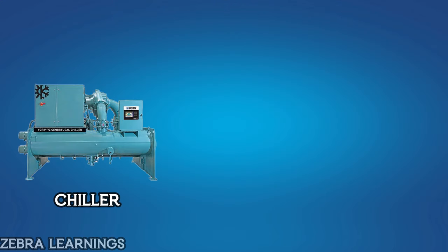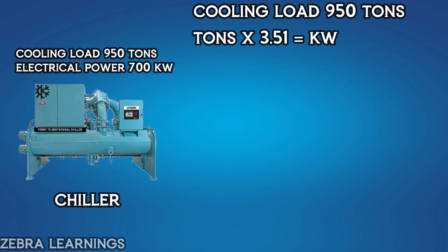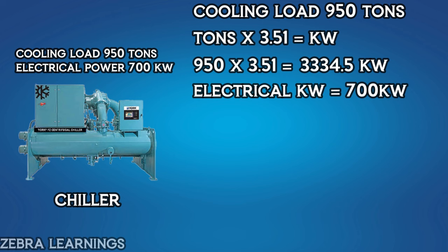Let's assume a chiller is running at a cooling load of 950 tons. We can convert this to kilowatts. If we multiply the tons value by 3.51, we will get the kilowatt value. 950 multiplied by 3.51 equals 3334.5 kilowatts. The electrical kilowatt of the chiller is 700.